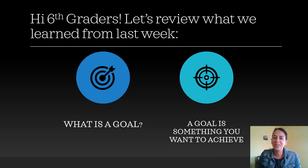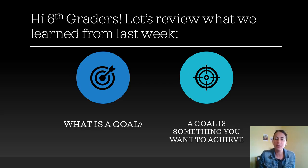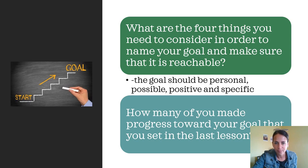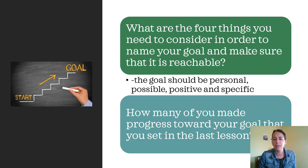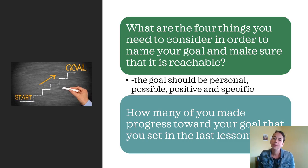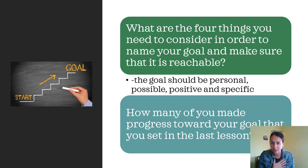Let's review what we learned from last week. Remember we talked about what is a goal? A goal is something that you want to achieve. Who can remember the four things that you need to consider in order to name your goal? The first step is naming your goal. The goal should be personal — it has to be personal to you, something that you want to achieve, not something that your friend cares about but something that you care about.